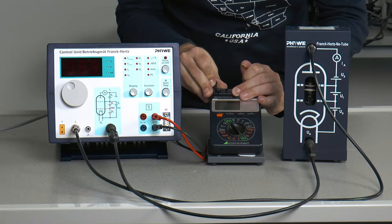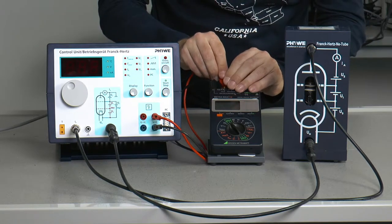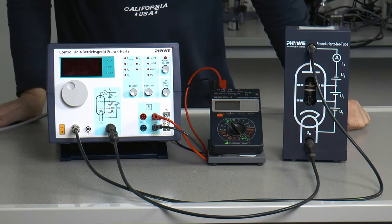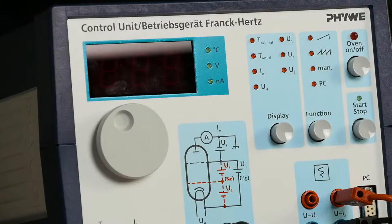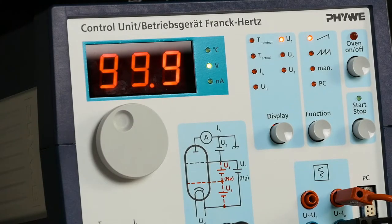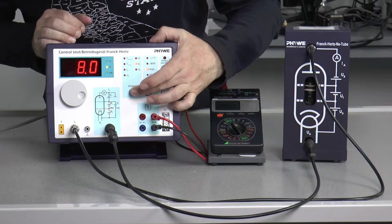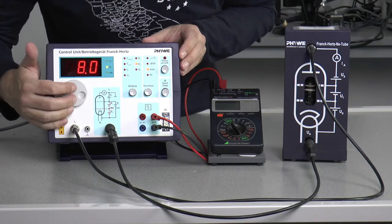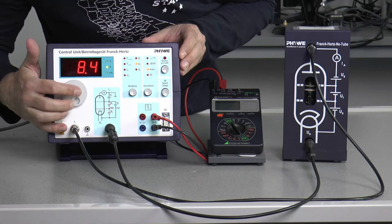Connect the operating device with the neon tube and the measuring device. Switch on with the operating device. The initial voltages are set on the operating device and then the device is set to the acceleration voltage.